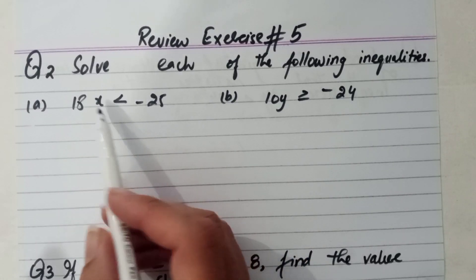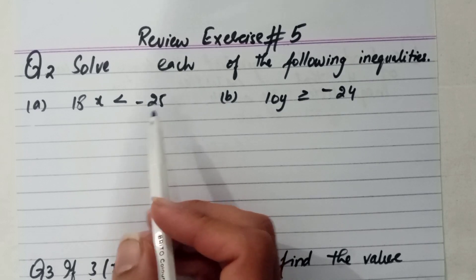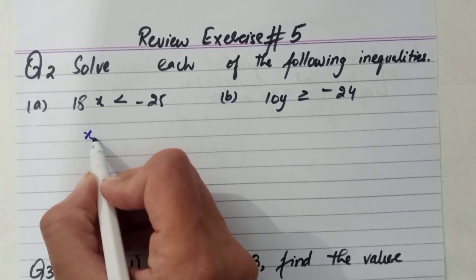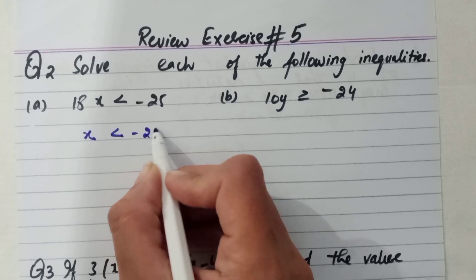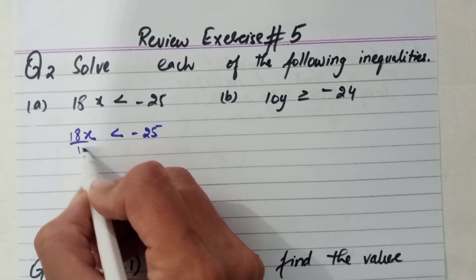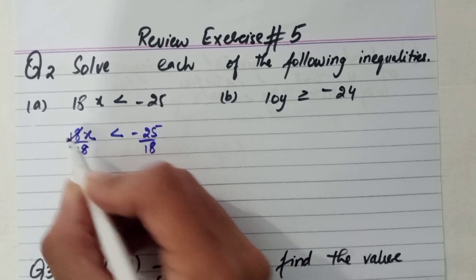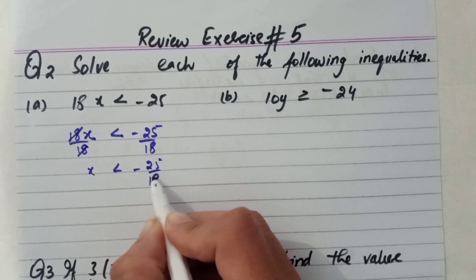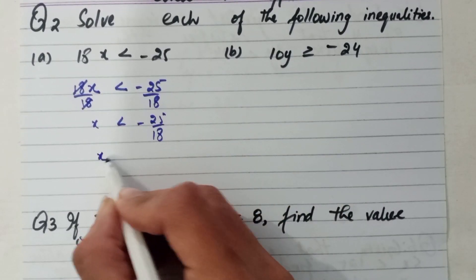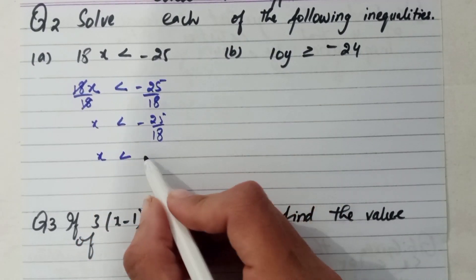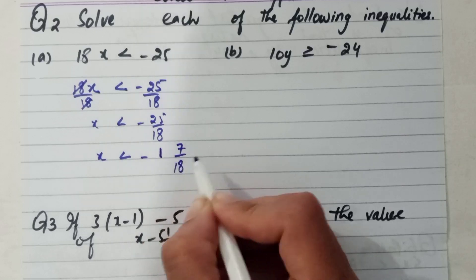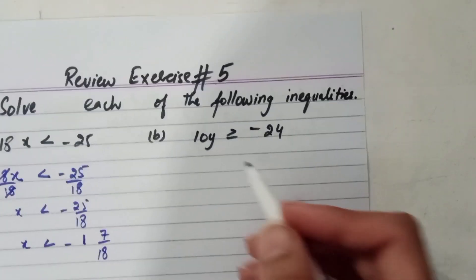Inequalities means that this side is not equal to that side, and we have to solve it just like an equation. We divide both sides by 18 and get minus 25 over 18. This is an improper fraction, so we write it as a mixed number: 1 and 7 over 18. That is the answer to part a.